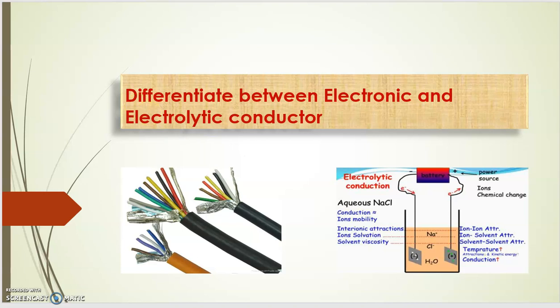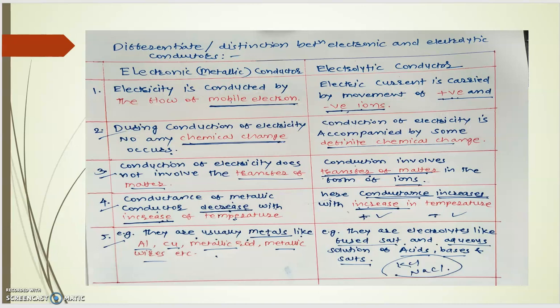So when there is a question, differentiate between electronic and electrolytic conductors in your exam, you have to write four to five points for getting the appropriate marks. We will explain one by one. Left hand side is of electronic or metallic conductor and right hand side is of electrolytic conductor.